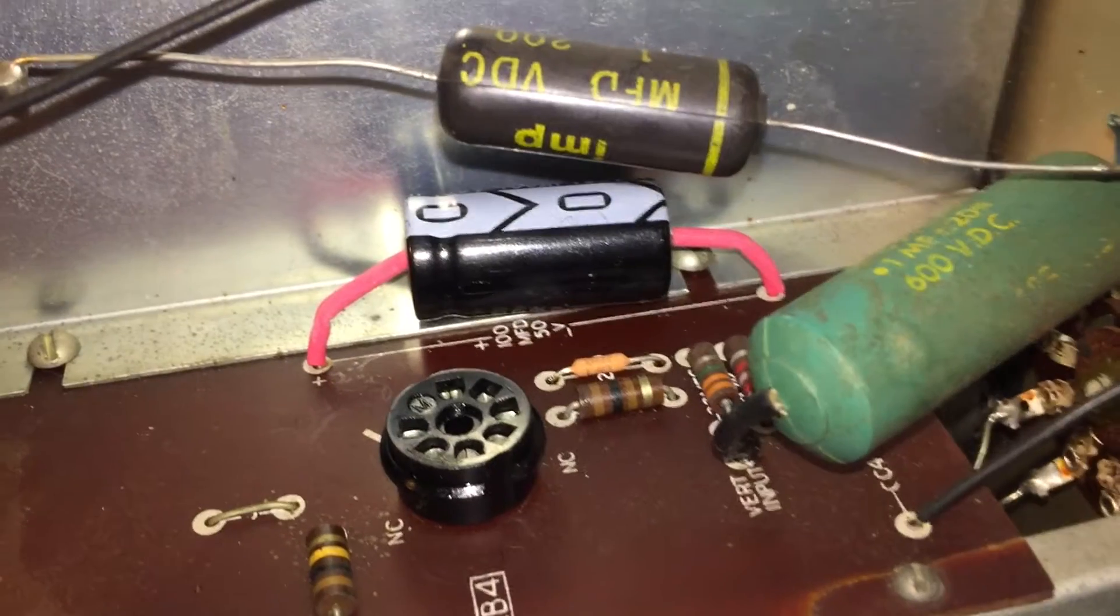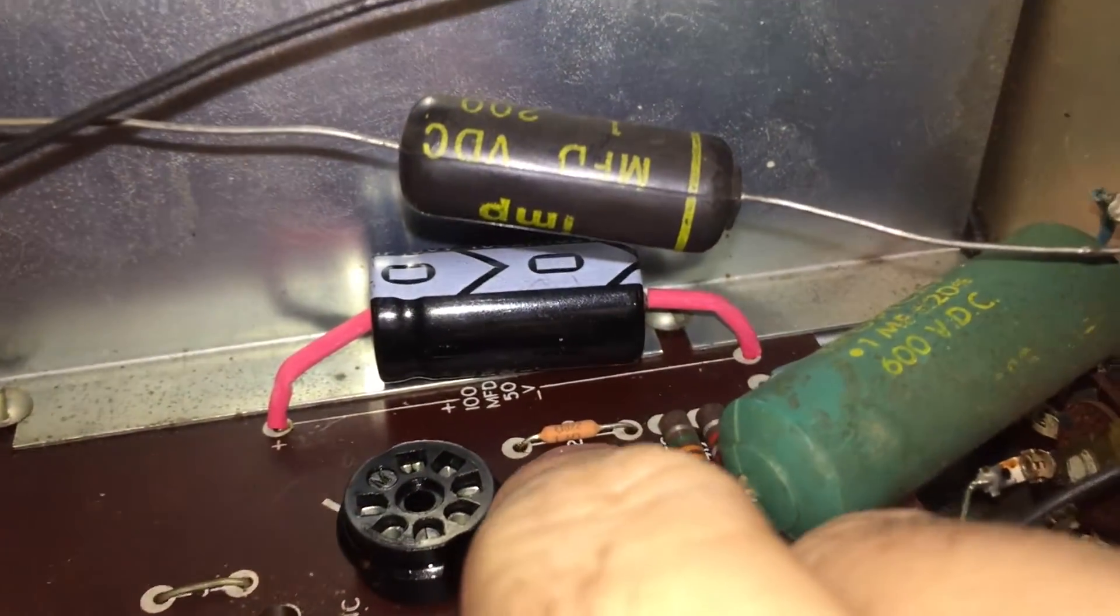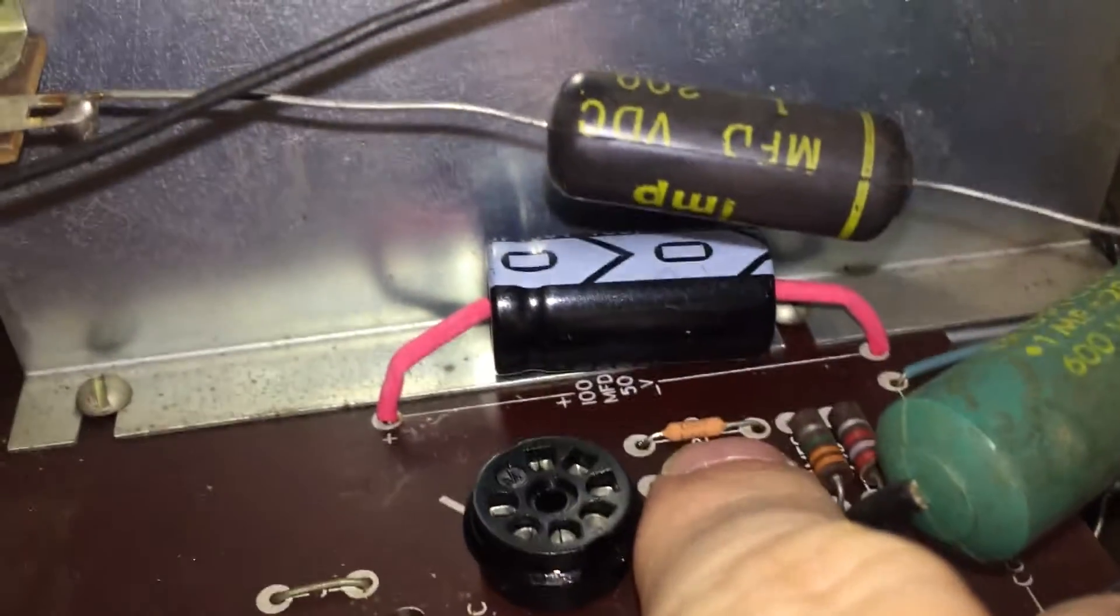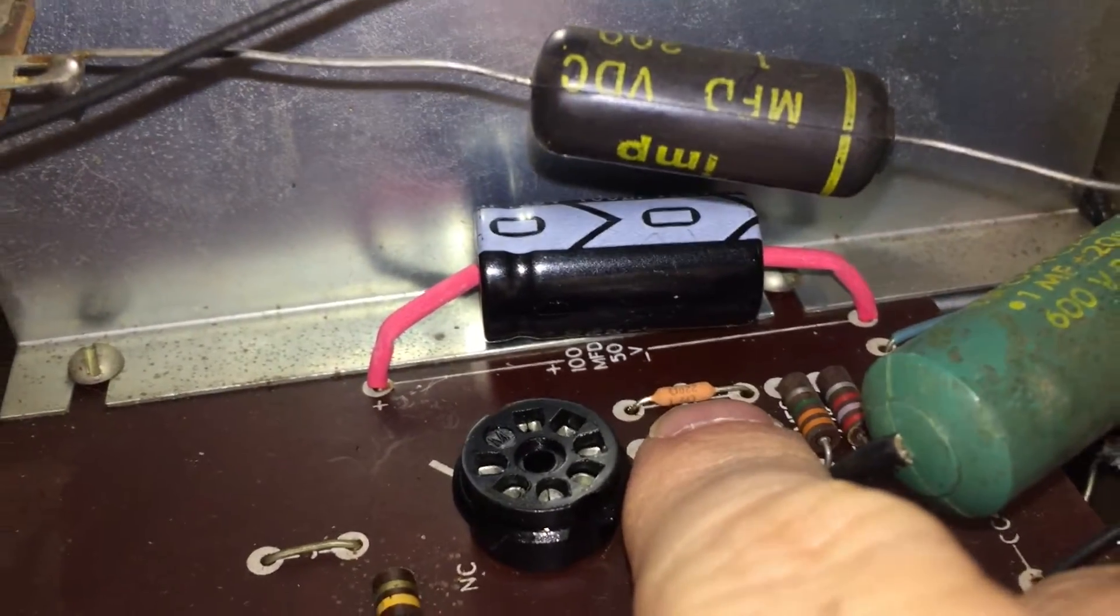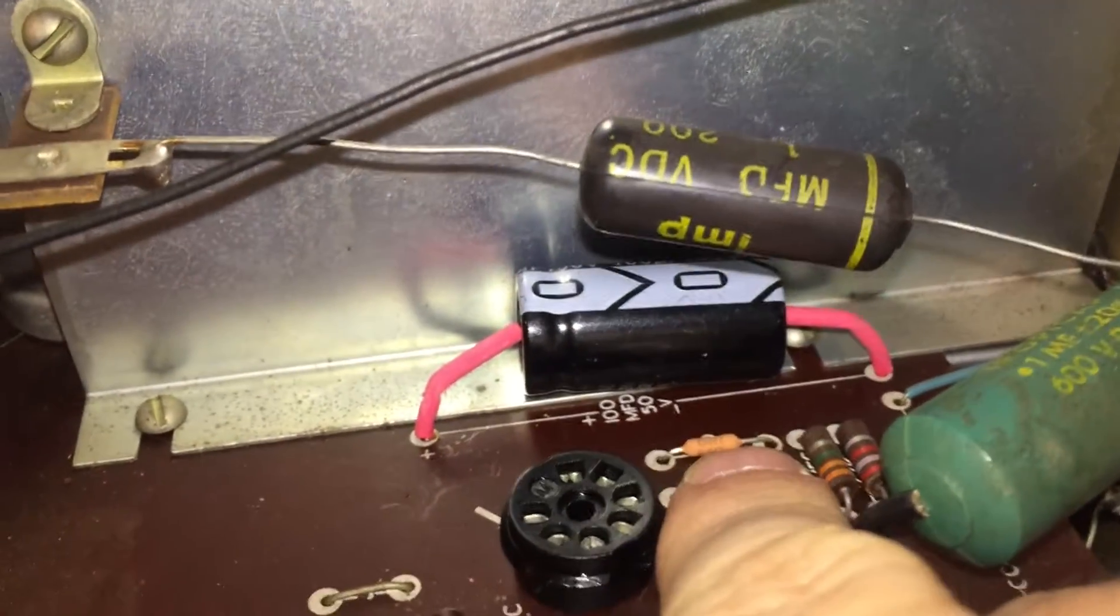This will be the first of many resistors swapped out as part of the resistor project. You can see here the replacement - this is actually a one watt resistor, one percent, 220 ohms. This is replacing a resistor that was actually half watt, I believe it was 10 percent, 220 ohms.